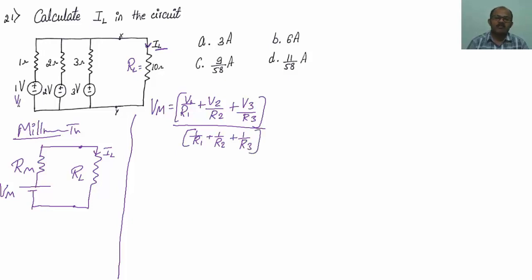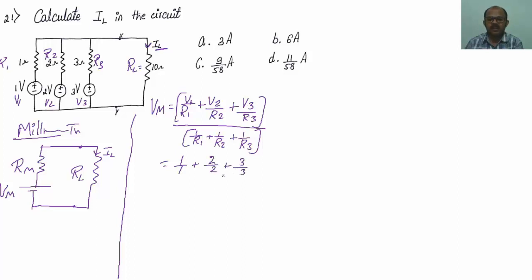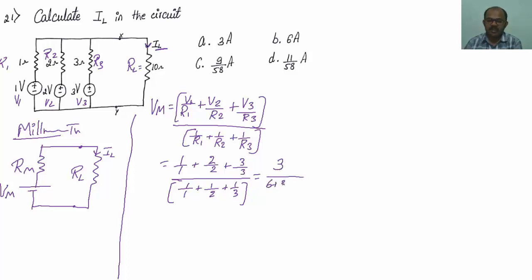Let me call 1V as V1, 2V as V2, and 3V as V3. The corresponding resistances are R1=1Ω, R2=2Ω, R3=3Ω. Substituting: numerator = 1/1 + 2/2 + 3/3 = 3. Denominator = 1/1 + 1/2 + 1/3 = 11/6. So Millman's voltage Vm = 3 / (11/6) = 18/11 volts.